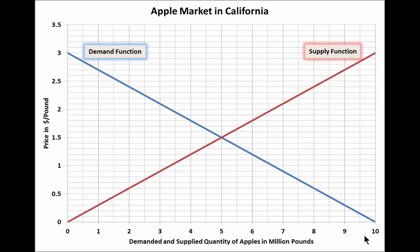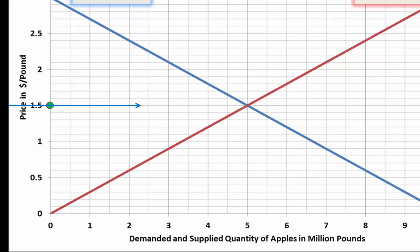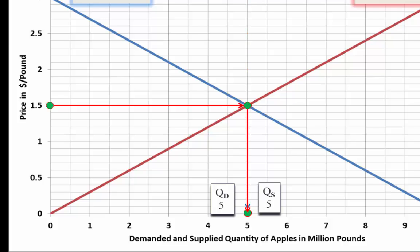1.50 dollars is the equilibrium price. You can see this because it generates the same demanded and supplied quantities. To find the demanded quantity, we move horizontally to the blue demand curve and then vertically down — quantity demanded is 5. To find the supplied quantity at a price of 1.50, we move horizontally to the red curve and then vertically down. Therefore, for a price of 1.50, quantity demanded and quantity supplied are simultaneously equal. This is an equilibrium.